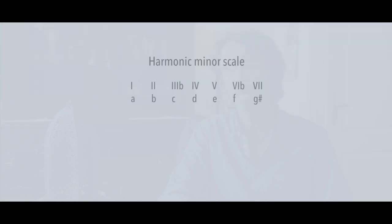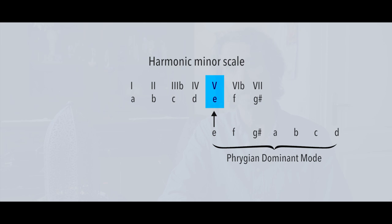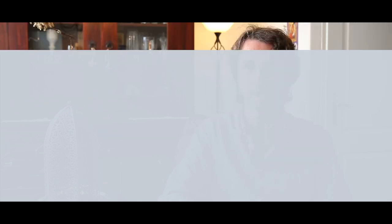The Phrygian dominant scale is actually a mode — it's the fifth mode of the harmonic minor scale, meaning that the Phrygian dominant scale starts on the fifth note of a harmonic minor scale. The very popular E Phrygian dominant scale is the fifth mode of the A harmonic minor scale. The notes and the chords derived from both scales are exactly the same; only the starting point is different — the root is different — and therefore it sounds different.